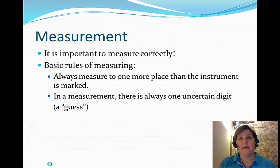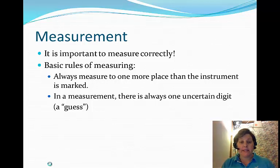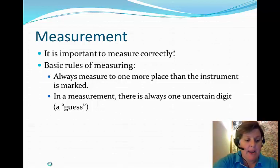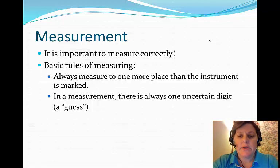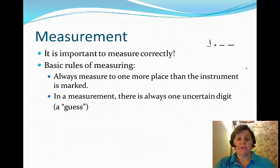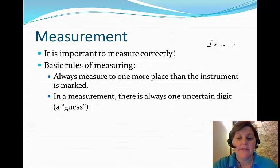So, measuring. Measuring is an important part of what scientists do. And we have to make sure to measure correctly. There are some basic rules of measuring using a ruler or a balance or a graduated cylinder or a beaker. Whatever you're using to measure something, there are some basic rules. We always measure to one more place than the instrument is marked. So if the instrument is marked to the ones place, think about your placeholders.